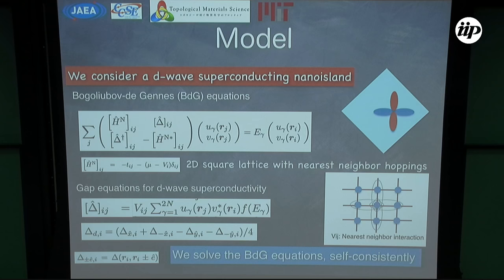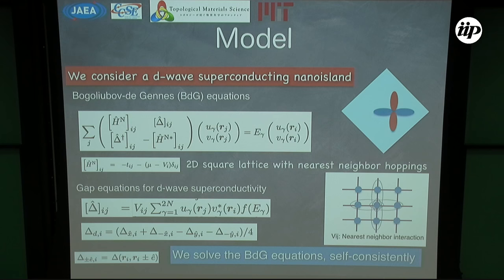This is the model. We use the BdG equation — this is the eigenvalue equation. We consider a two-dimensional square lattice with nearest-neighbor hoppings. We also solve the gap equation for d-wave superconductivity — this is the d-wave pairing channel. This is a tight-binding model, so we consider nearest-neighbor interactions. We do not consider on-site interaction. We have to solve the BdG equations and gap equation self-consistently. This is a real-space equation and a large eigenvalue equation, so usually we cannot solve this in real space.